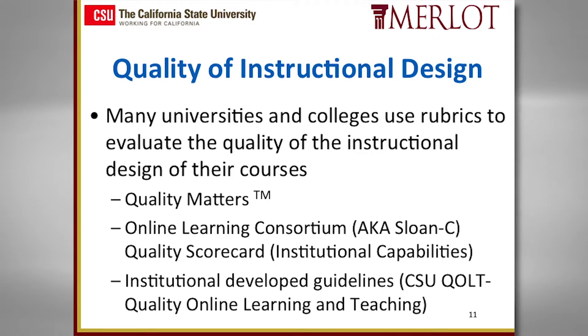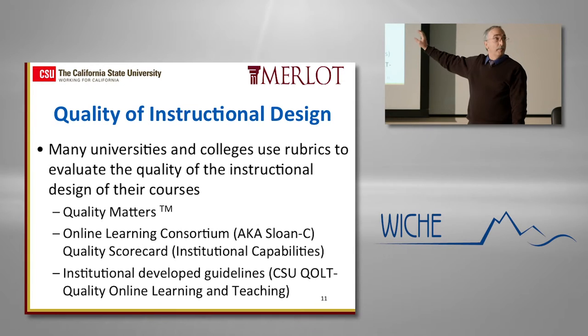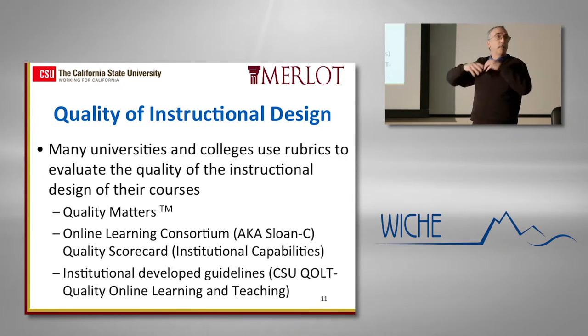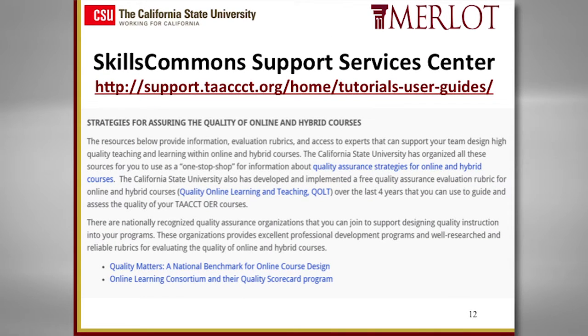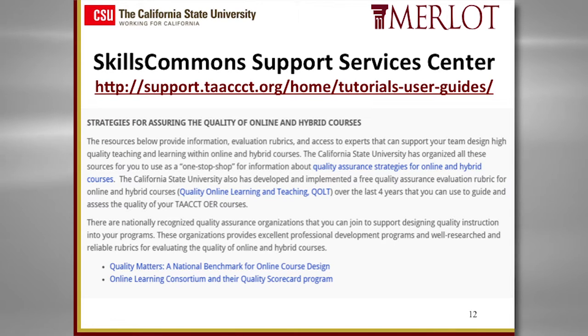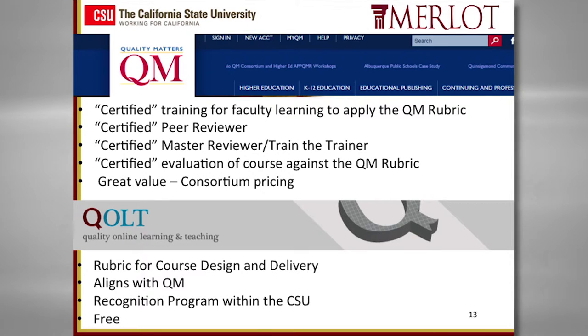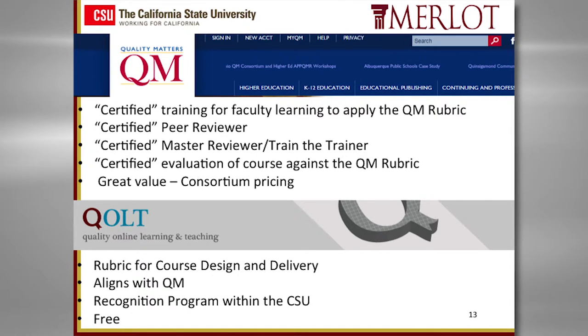These are rubrics out there — Quality Matters, well established, research-backed. You have to pay some money, but it's relatively inexpensive. You may want to look out for your grants and become QM members so you can apply the rubric. If you want a free one, the CSU has one too. In Quality Matters, you can become certified as a trainer or master reviewer. Part of building trust in the curriculum you're presenting is building credentials. If you have certified QM peer reviewers who've reviewed the instructional design, it helps put a little stamp of quality on that.